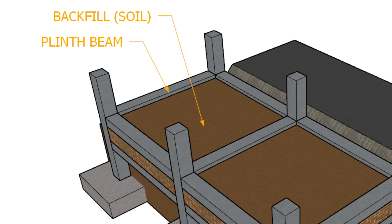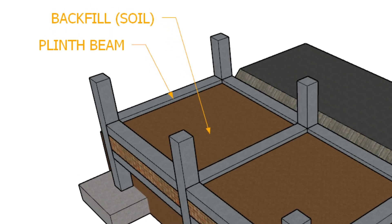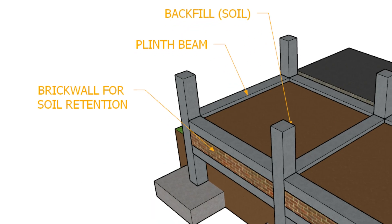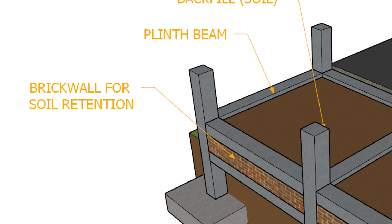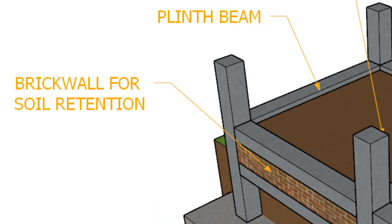Now below the plinth beam, we usually fill the space with soil. This process is called backfilling. But if this soil is loose or poorly compacted, it can erode or settle under load, which can lead to structural problems. To retain this filled soil, we construct a brick wall along the periphery. However, this wall rests on soil, and if that soil is weak or clayey, the wall may tilt, crack, or even settle over time.